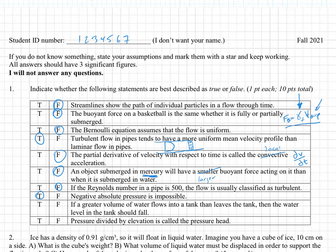Number nine: greater volume of water flows into the tank than leaves the tank. So you've got a little tank with some water coming in and some water leaving. If more is coming in and just a little bit is trickling out, then the water level should be rising. It says it falls here, so that would be wrong. We'll go with false.